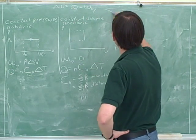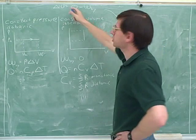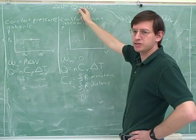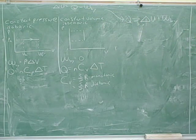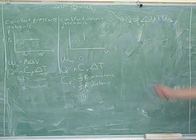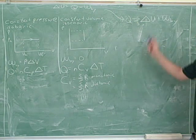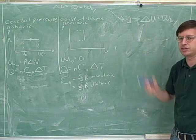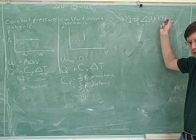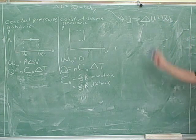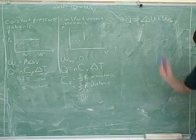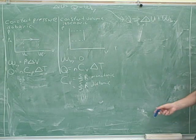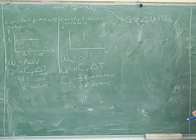If we solve the first law equation for Q, we get that any heat added will either go to raise the internal energy or allow the system to do work. This is just common sense: any energy we put in has to do something — it's either going into raising the internal energy or being used to do work. Raising the internal energy means changing the temperature, so any energy added by heat will either raise the temperature or move the piston.